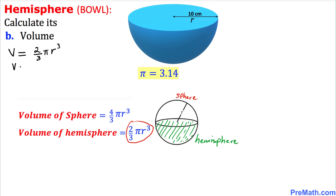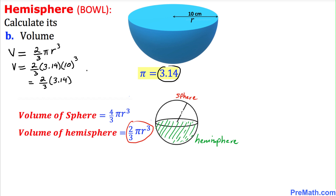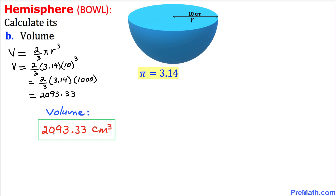Now let's calculate the volume. V equals (2/3) times π — I'm replacing π with 3.14 — times r³, which is 10³. That gives us (2/3) times 3.14 times 1,000. Multiplying everything out using a calculator gives us 2,093.33. So the volume of this given shape turns out to be 2,093.33 centimeters cubed.